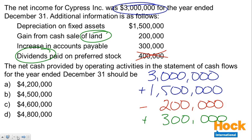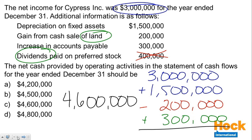There's no adjustment made for those $400,000. Adding all of this together, our cash flows from operating activities is $4,600,000, which is choice C. This is a standard operating activities question, and you need to keep in mind that you don't always make an adjustment for every number included in the question. The dividends on preferred stock required no adjustment, so make certain you identify information in the question that you're not using to answer the question.